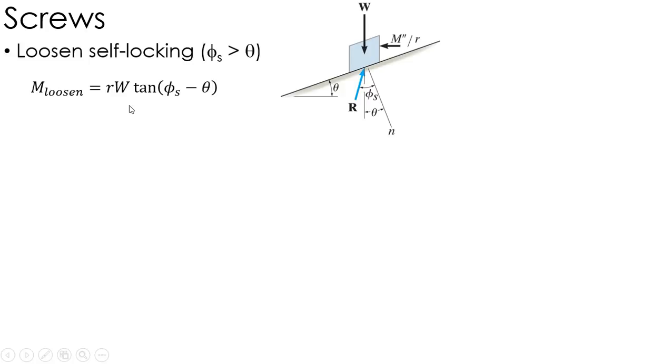Now, I'm not going to rewrite the equations, but using those same equations, I can find that moment to loosen a self-locking screw to be the radius times the load, times the tangent of the friction minus the lead angle. And you can see that angle comes in right here, which is the friction angle minus the theta angle.